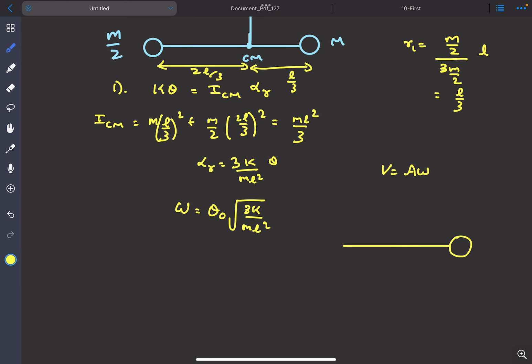if we draw the FBD, now the conditions are: this is mass m, this is mass m/2, and this is the axis about which we have found out the ω.